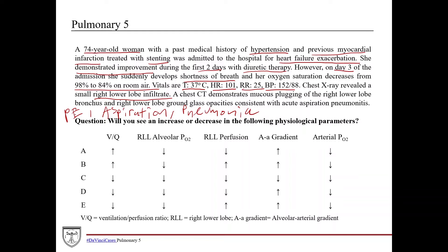A chest CT is obtained to further evaluate the infiltrate, and it demonstrates mucus plugging — she aspirated. A bunch of mucus went down into the trachea and is seen in the right lower lobe bronchus, plugging the bronchial supply to the right lower lobe. You also see right lower lobe ground glass opacities consistent with acute aspiration pneumonitis — representing edema and inflammation from plugging the airway.